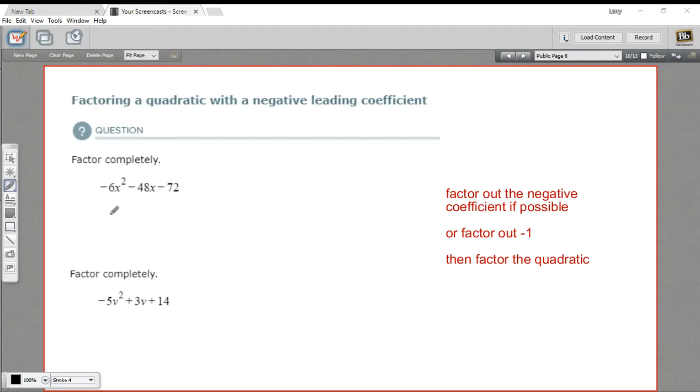In these problems, we are trying to factor quadratic expressions that have a negative leading coefficient. The thing to do when you have a negative leading coefficient is get rid of it. Factor it out if you can. If you can't factor that whole number out of everything, then just factor a negative 1 out of everything, and then factor as you normally would. Let me show you how that works.